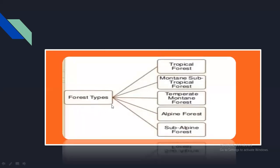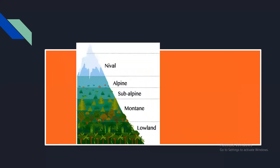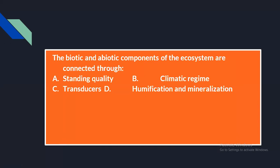There are different forest types: tropical forest, mountain subtropical forest, temperate mountain forest, alpine forest, and sub-alpine forest. The next question: biotic and abiotic components of the ecosystem are connected by — option A: standing quality, option B: climatic regime, option C: transducer, option D: humification and mineralization. The answer is humification and mineralization — they connect the biotic and abiotic components of the ecosystem.